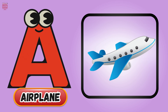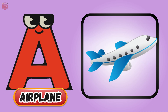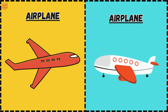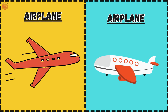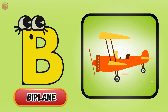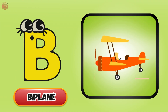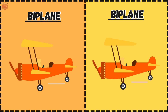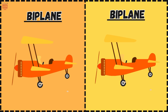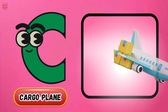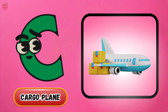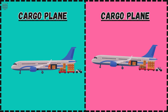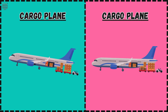A is for airplane, flying high across the sky. B is for biplane, with two wings that glide and fly. C is for cargo plane, carrying loads from place to place.